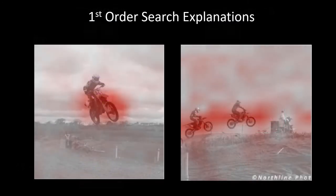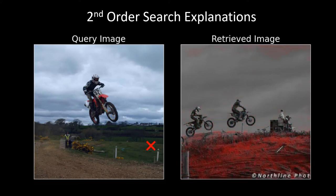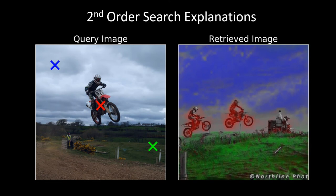This approach allows us to extract heat maps so we can understand where a network is looking during a similarity judgment. Though these heat maps provide a high-level overview of a model's rationale, there's more to the story. An image can be similar to another for any number of reasons and share multiple objects in common. We show that by generalizing the Shapley value, we can extract a full pairwise correspondence between query and retrieved images.